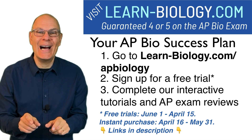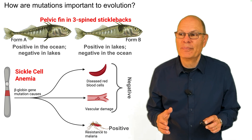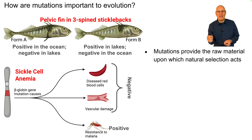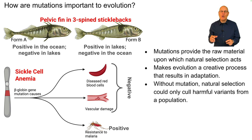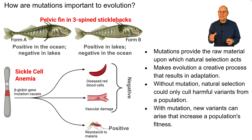How are mutations important to evolution? Mutations provide the raw material upon which natural selection acts. Mutation makes evolution a creative process that results in adaptation. Without mutation, natural selection could only cull harmful variants from a population. But with mutation, new variants can arise that increase a population's fitness.